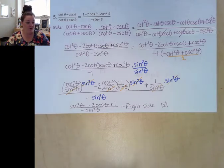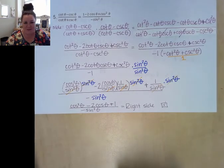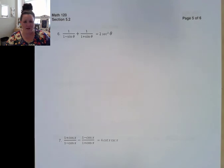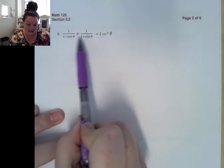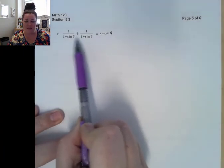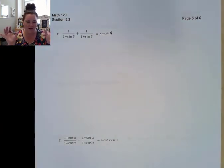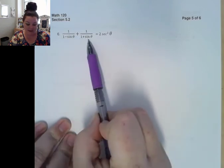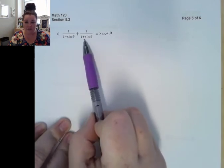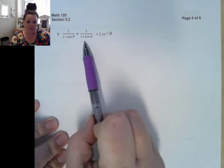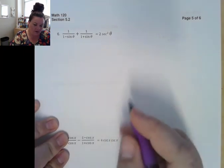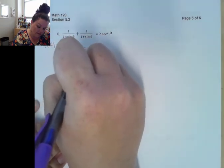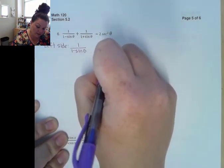I have three more to work through; they're kind of just more of the same — that last one was probably the worst one. On this next one, I see two quantities that look almost identical except for the middle sign, so I should be thinking about needing that other quantity. Instead of multiplying by a form of 1 though, we could just get a common denominator. The common denominator between these two terms would be both quantities together.